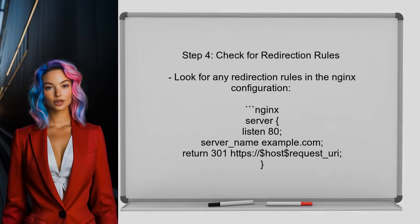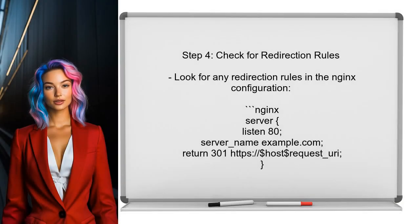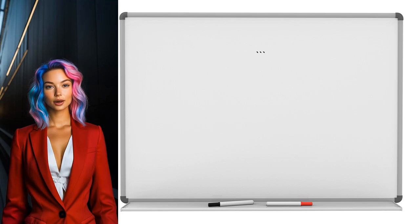If the curl command returns a 301 error, check if there are any redirection rules in the Nginx configuration. Sometimes the ingress may redirect HTTP traffic to HTTPS, which can cause this issue.